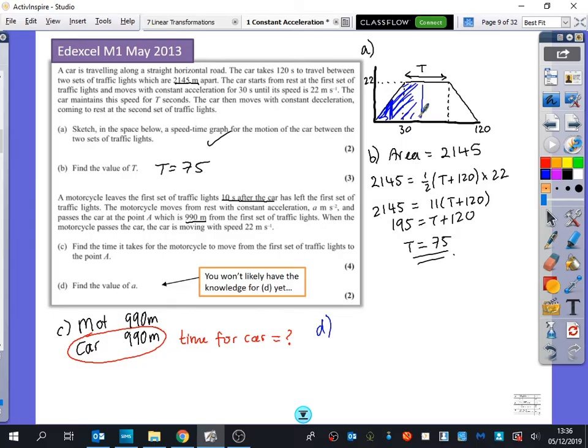Good. It says when the motorcycle passes the car, the car is moving with speed 22 meters per second. So it's saying when they've travelled the same distance, the car is already on that flat bit. That's how we know that the shape we're looking at for this blue part, the area of the blue part, is going to have to be a trapezium. And we want that distance to be 990.